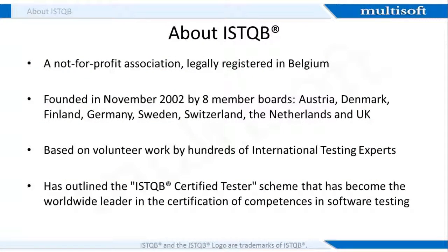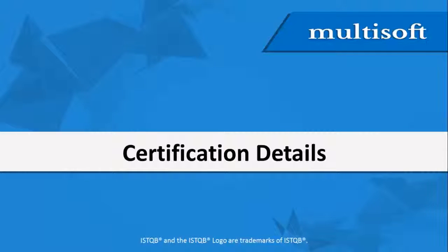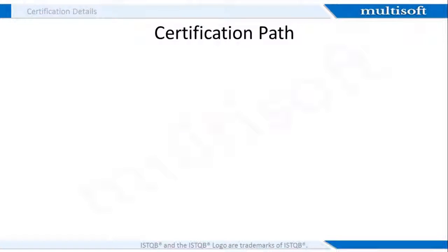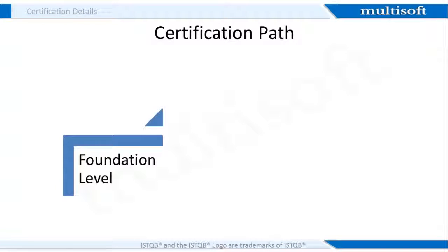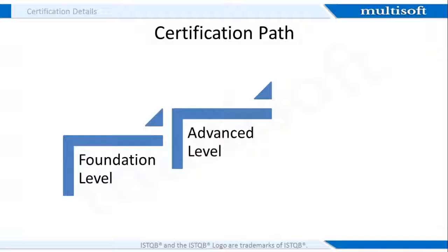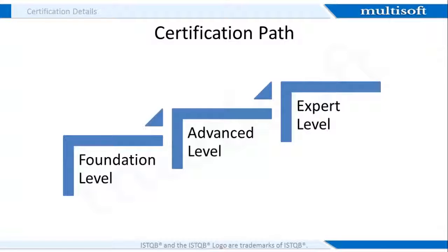ISTQB was founded in November 2002 and is a not-for-profit association legally registered in Belgium. Also, it has defined the ISTQB Certified Tester Scheme that has become the worldwide leader in the certification of competencies in software testing. ISTQB has created the world's most successful scheme for certifying software testers. It starts from the foundation level which includes the agile tester and model-based testing, then moves on to the advanced level. After completing the advanced level, individuals can work as test manager, test analyst and technical test analyst. The top level is the expert level through which people work in the area of test management, testing process improvement, test automation engineering and security testing.